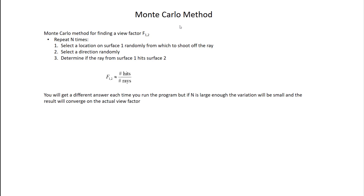For view factors the process becomes a lot simpler. To find view factor F12 — from surface 1 to surface 2 — shoot out many rays from surface 1 and count how many times you hit surface 2. Repeat N times, where N must be large: select a location on surface 1 randomly, select a direction randomly, and track whether the ray hits surface 2. F12 is simply the number of hits on surface 2 divided by N, the total number of rays.